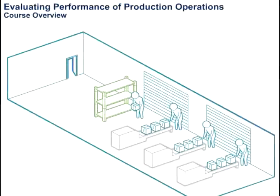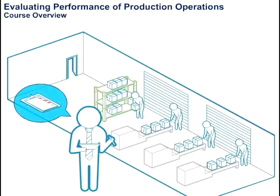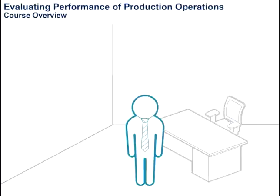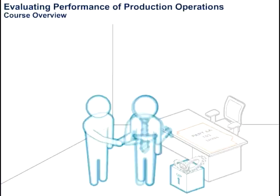To optimize production operations, managers need accurate and readily available information about inventory, which can then be used to make effective and timely decisions about production. Take the example of Jack, a marketing manager at ABC Corporation. He has a new project in hand that can be started immediately if the company has 100 widgets in stock. He collects relevant data and finds out the part number of the widget.